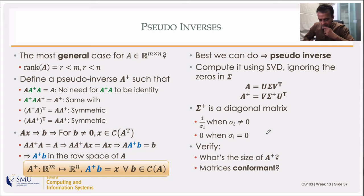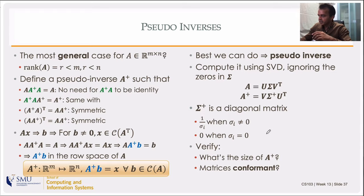The pseudo inverse is computed from SVD: A⁺ = V Σ⁺ U^T, where Σ⁺ is obtained by taking the reciprocal of each nonzero diagonal entry of Σ and leaving zeros as zeros. This uses the full SVD; the economic version can also be used. The pseudo inverse maps from the output space back to the input space, completing the symmetry among the four fundamental subspaces.